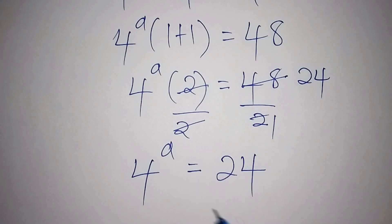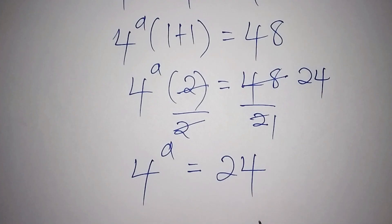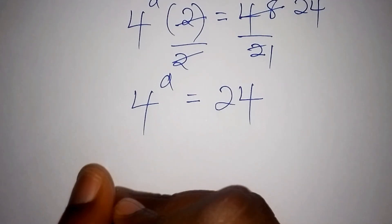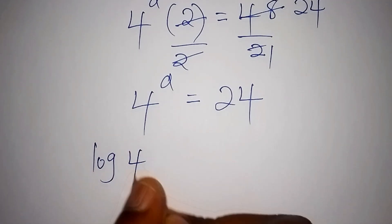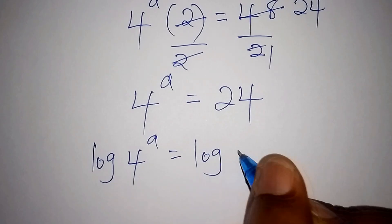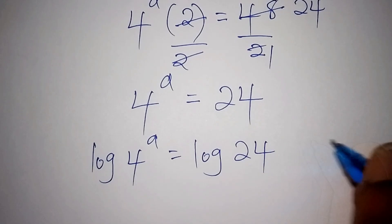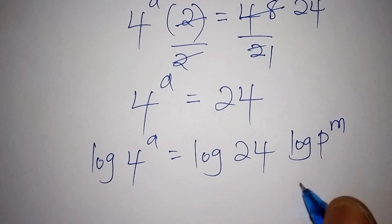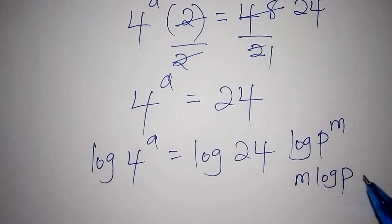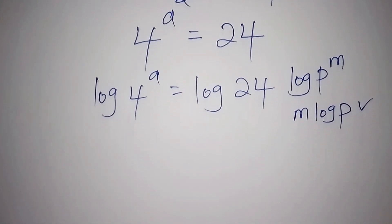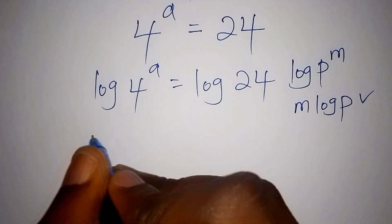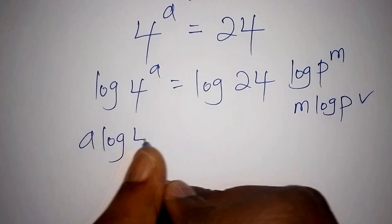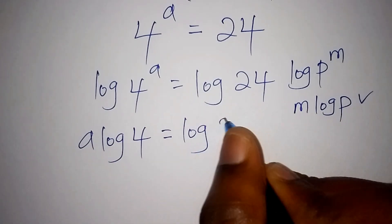Now we still want to work out the value for a. The best way, when you reach this particular form, is to introduce the log on both sides. So we shall have the log of 4 to the power of a is equals to the log of 24.